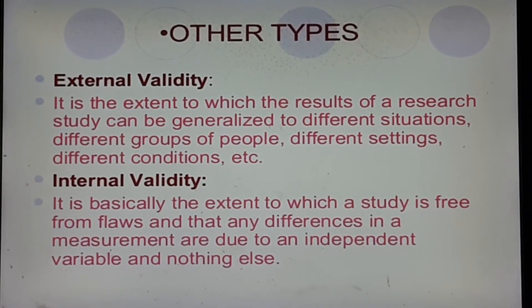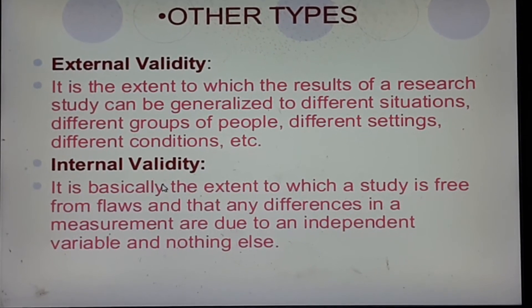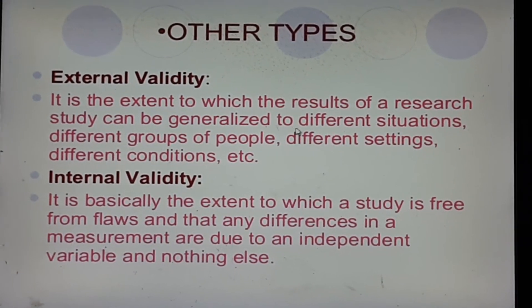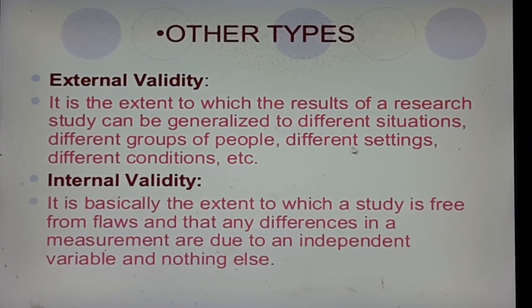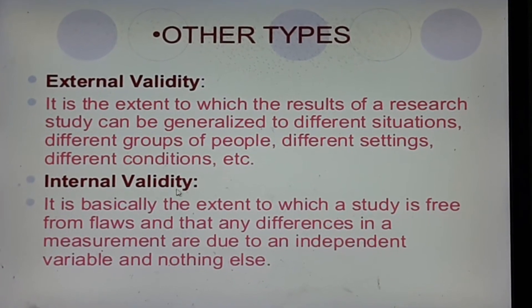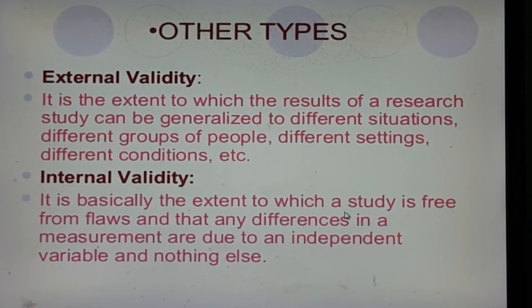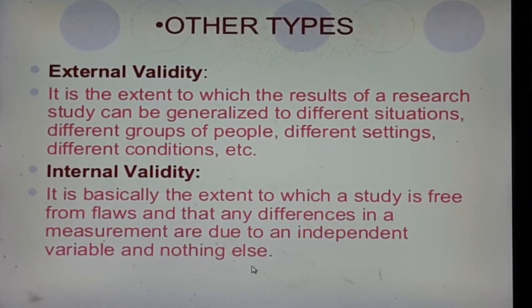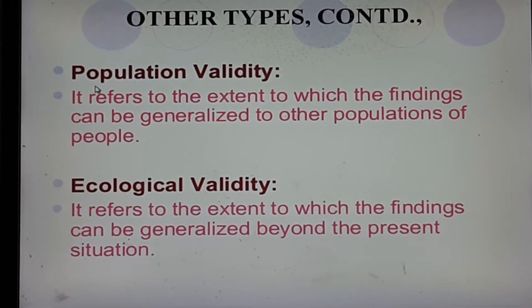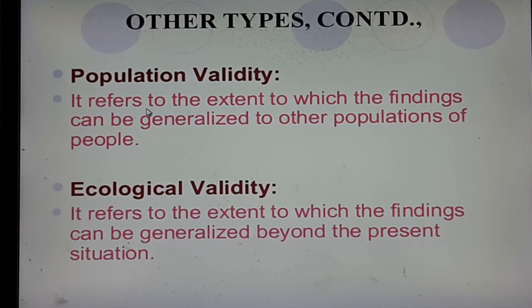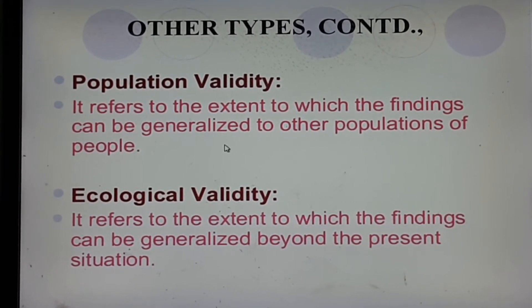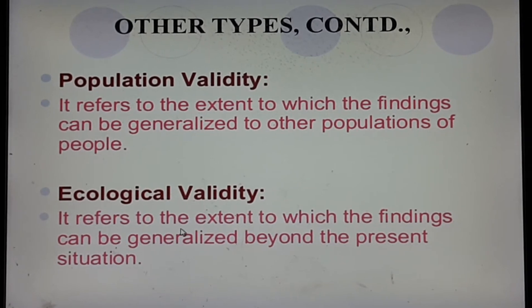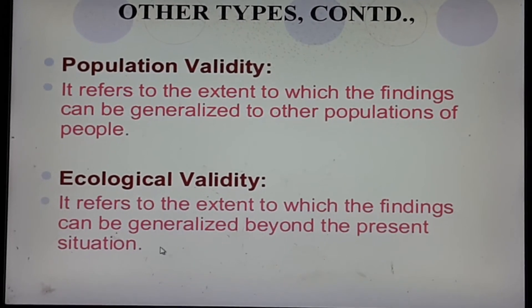There are also other types of validity, such as external validity and internal validity. External validity is the extent to which the results of a research study can be generalized to different situations, different groups of people, different settings, and different conditions. Internal validity is the extent to which a study is free from flaws and any differences in a measurement are due to an independent variable and nothing else. These can further be divided into population validity — how well findings generalize to other populations — and ecological validity — how well findings generalize beyond the present situation.